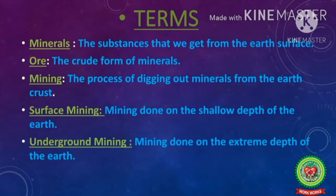Number one: minerals means the substances that we get from the earth's surface. Number two: ore means the crude form of minerals. Number three: mining means the process of digging out minerals from the earth's crust. Number four: surface mining means mining done at a shallow depth of the earth. Number five: underground mining means mining done at extreme depth of the earth.